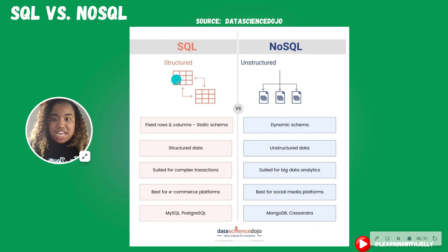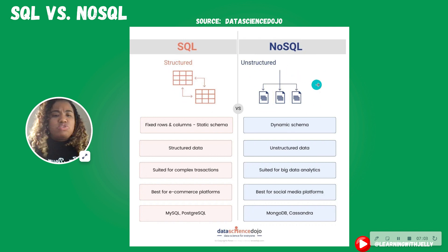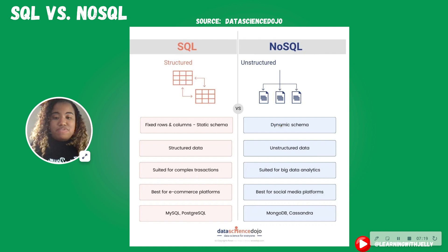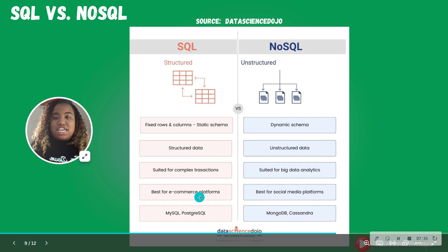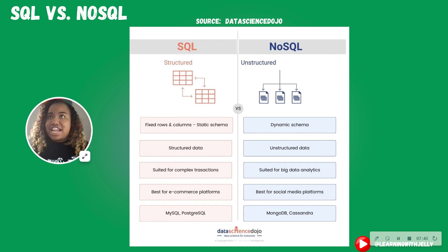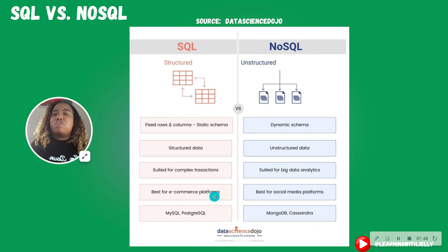Some differences between the two: SQL is more structured in a rows-and-columns format and you have relationships between the tables. With NoSQL, you don't really need a relationship — there doesn't need to be a relationship between one Airbnb property and another if you're storing them as documents. NoSQL has a dynamic schema where relationships aren't required, while SQL has a static schema with fixed rows and columns. SQL is structured data; NoSQL is unstructured. SQL can handle a lot of complex transactions, while NoSQL can handle big data. For reliable data such as financial data, healthcare data, or e-commerce purchase data, you'll probably be using structured SQL.